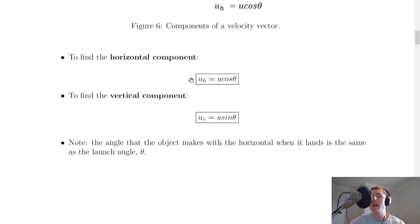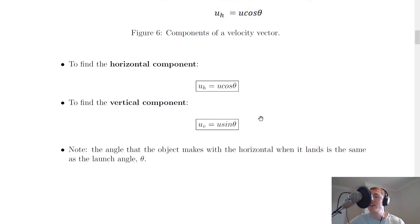So that means we have two expressions for the horizontal and vertical components for the initial velocity of a projectile launched at an angle. So to find a horizontal component we use u_h equals u cos theta and to find the vertical component we use u_v equals u sine theta. Note that you don't get these on the relationship sheet in the exam so you need to remember them.